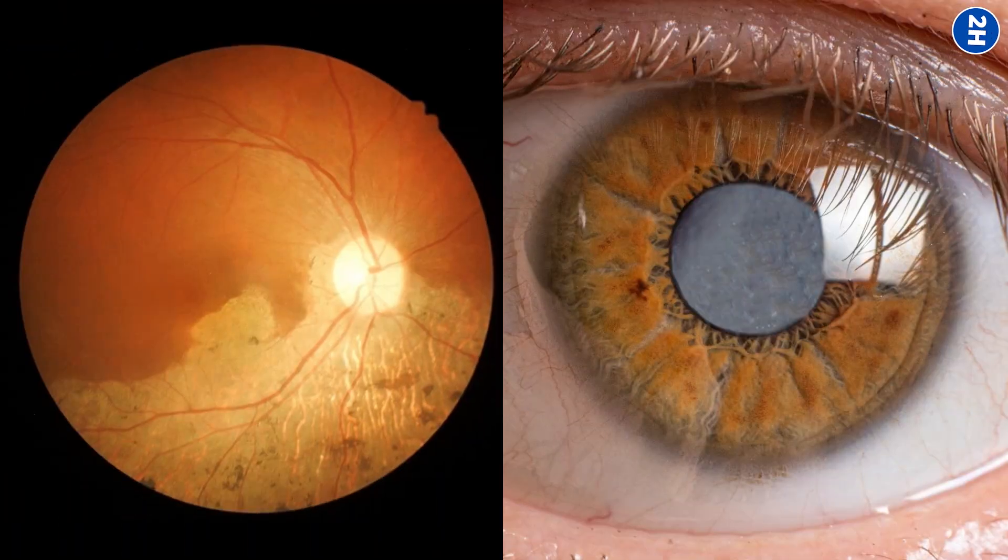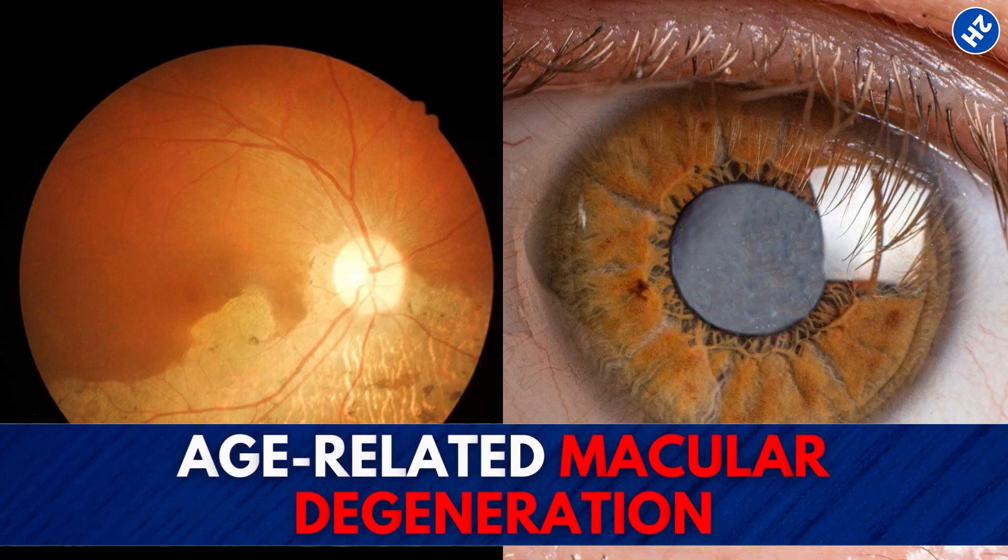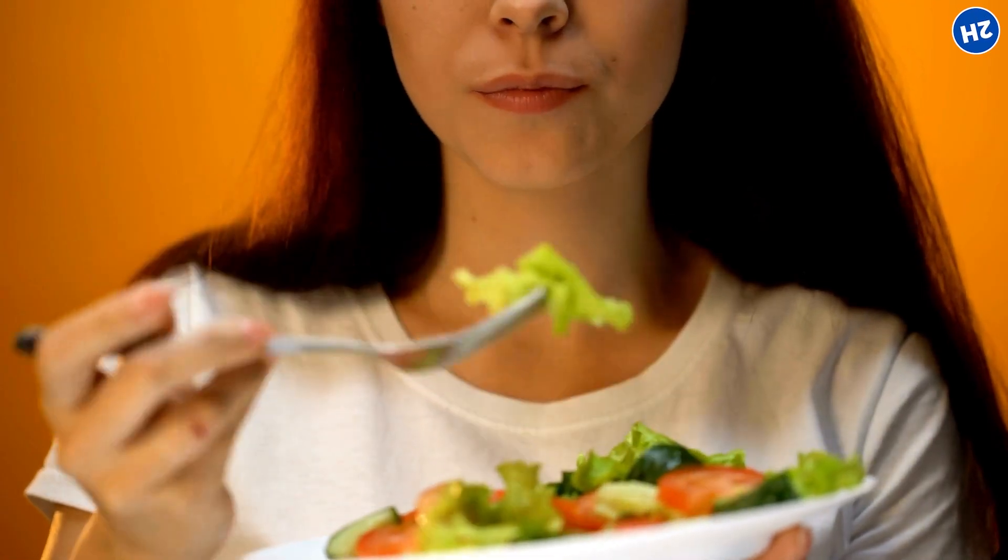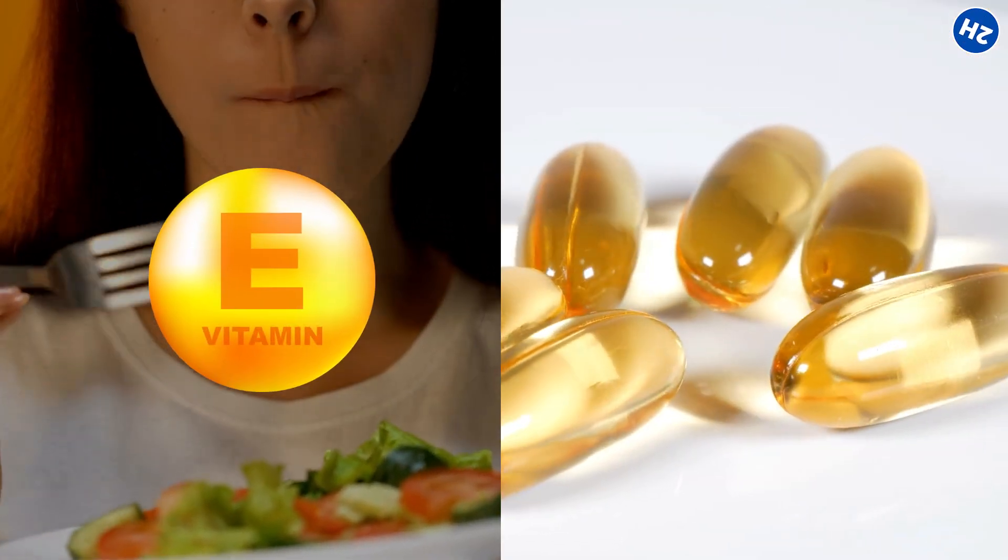According to studies, the two most common causes of vision loss in people, cataracts and AMD (age-related macular degeneration), can be prevented by eating a diet high in vitamin E or taking vitamin E supplements.